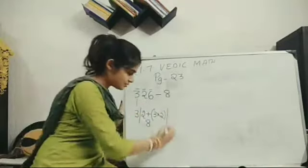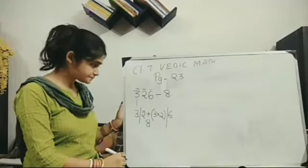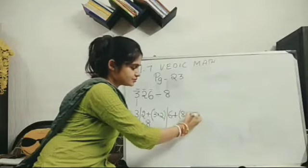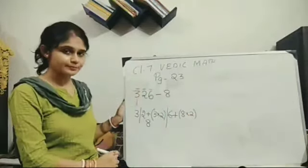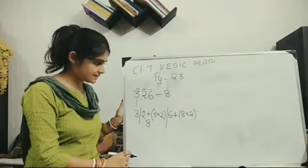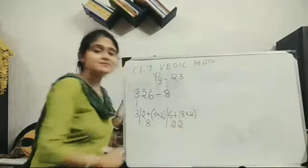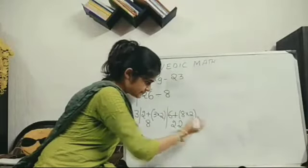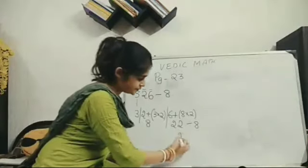Still one more part is left. So here I will write 6 again. Now plus 8 into 2 because my complement is 2. 8's complement is 2, right? So 2 into 8 gives me 16 plus 6 will give me 22. This is my last number. I will divide with 8. How many times it will go? It will go 2 times. So I will put 2 here.